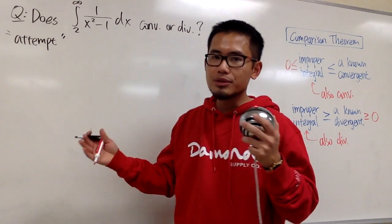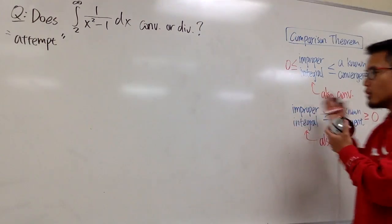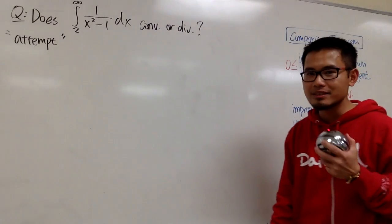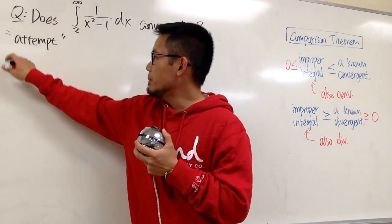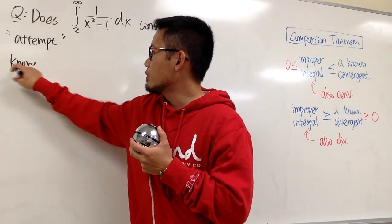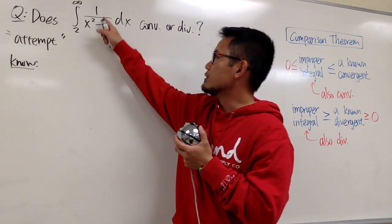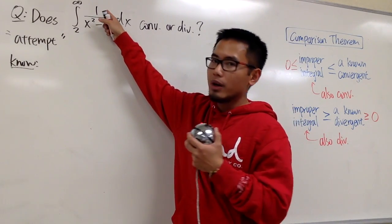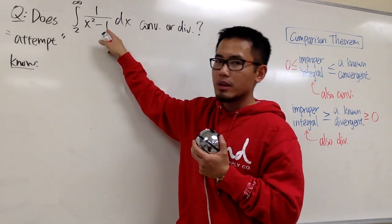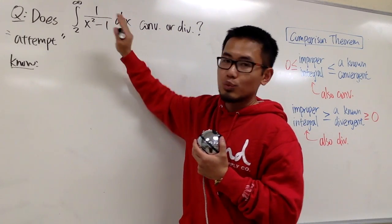As usual, in order to use the comparison theorem, we have to first come up with something that we know much better. So let me put down what we know. In this case, we have 1 on the top only, and on the bottom we have x squared minus 1.